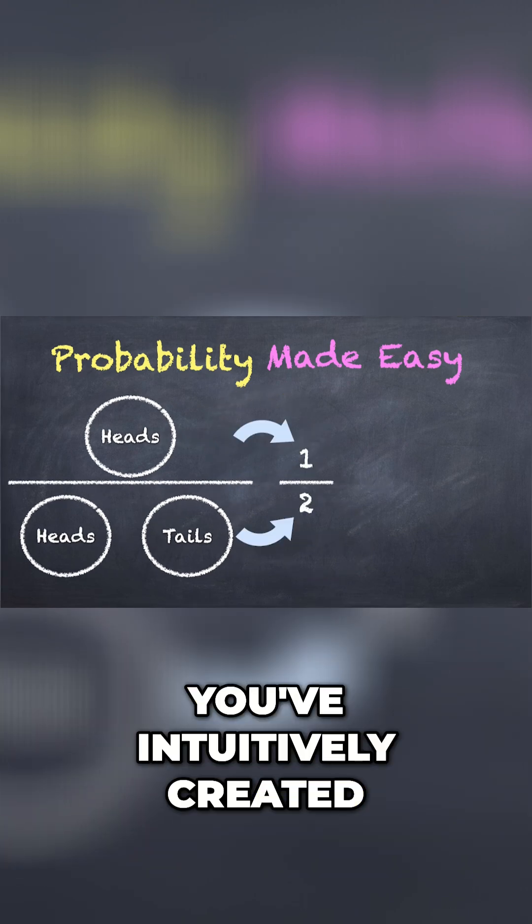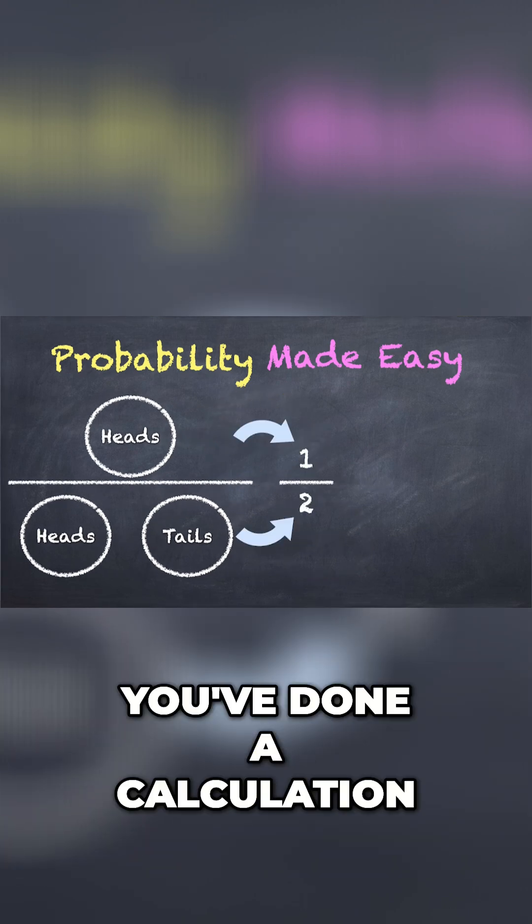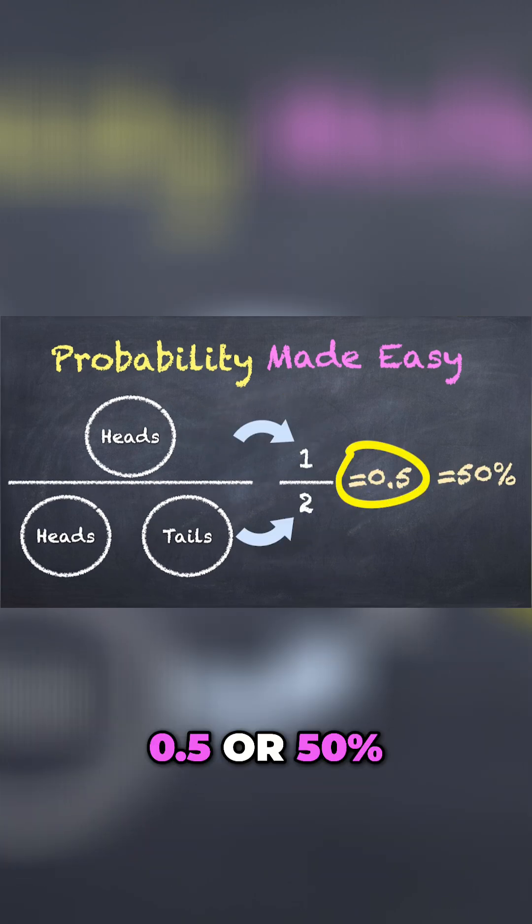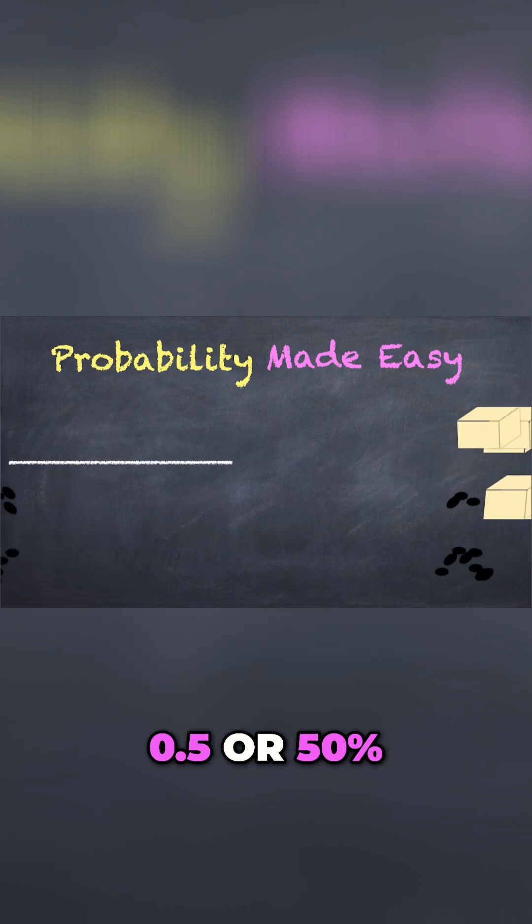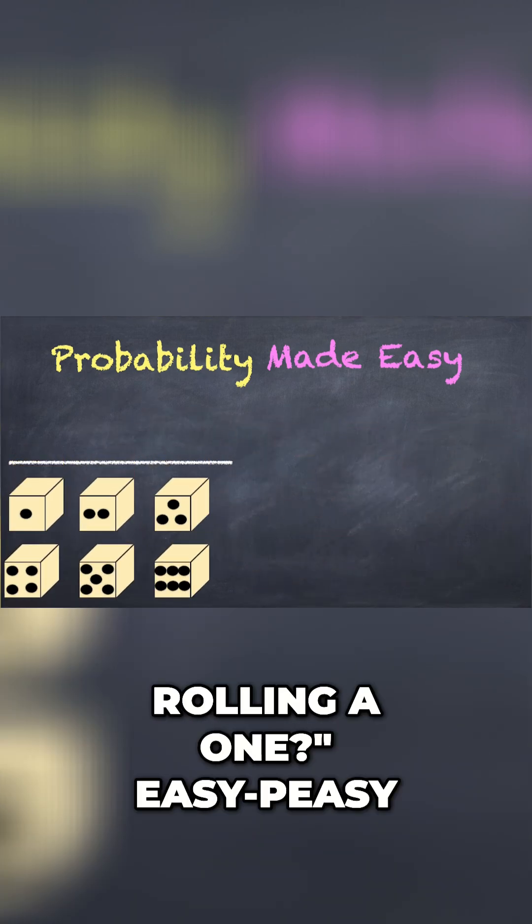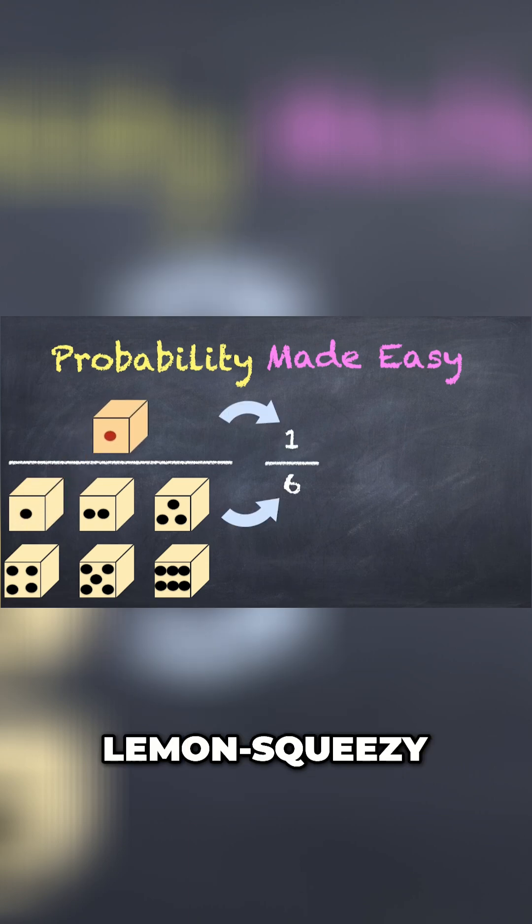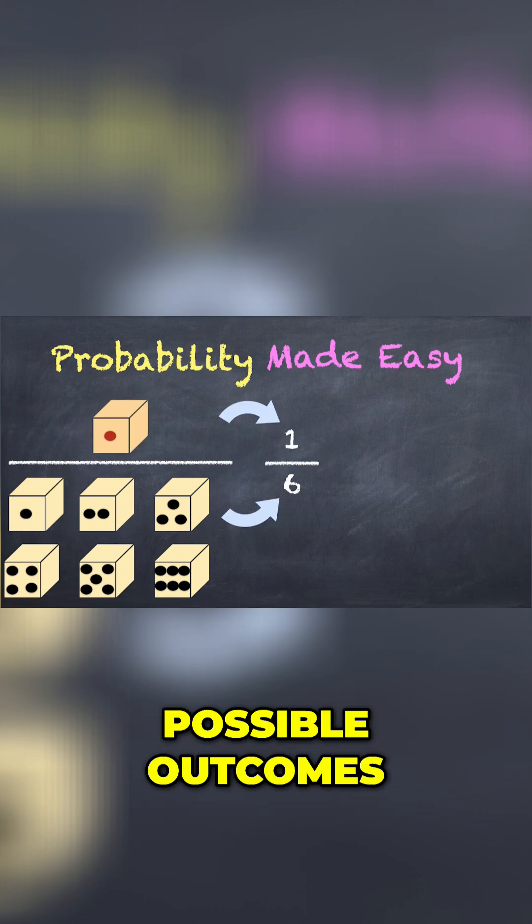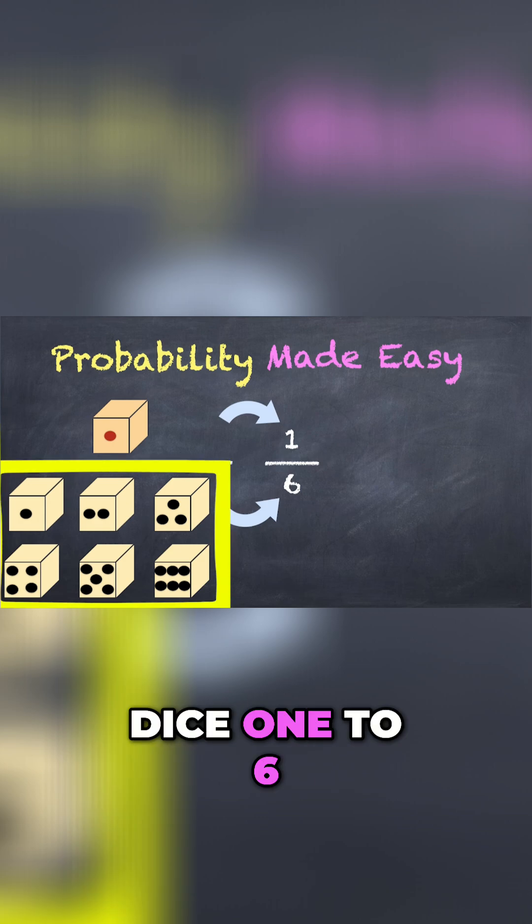In your head, you've intuitively created a fraction and done a calculation, and the answer is 0.5 or 50%. And if I were to roll a dice and asked you what are the chances of rolling a 1, easy peasy lemon squeezy, the denominator at the bottom are all the equally likely possible outcomes, right? Dice 1 to 6.